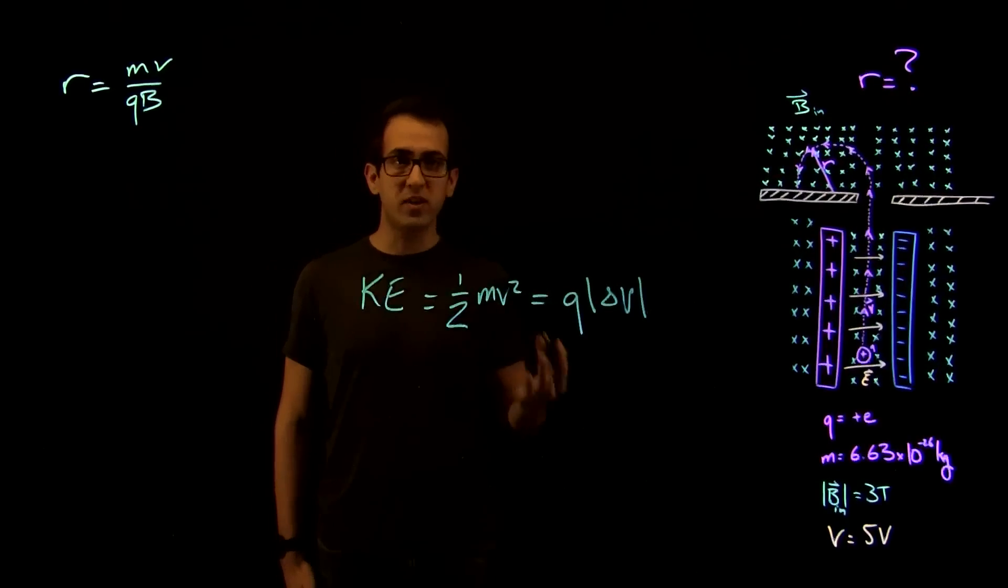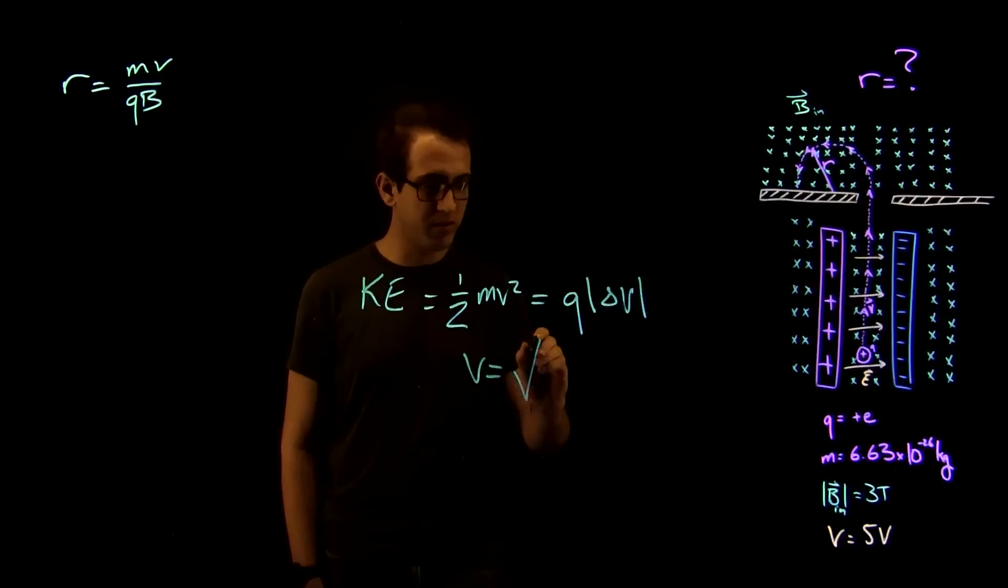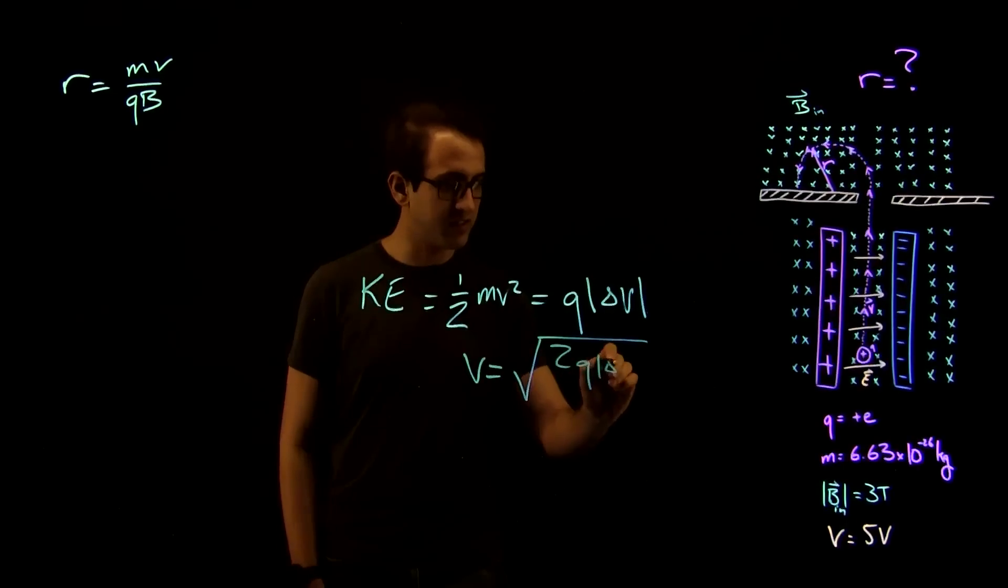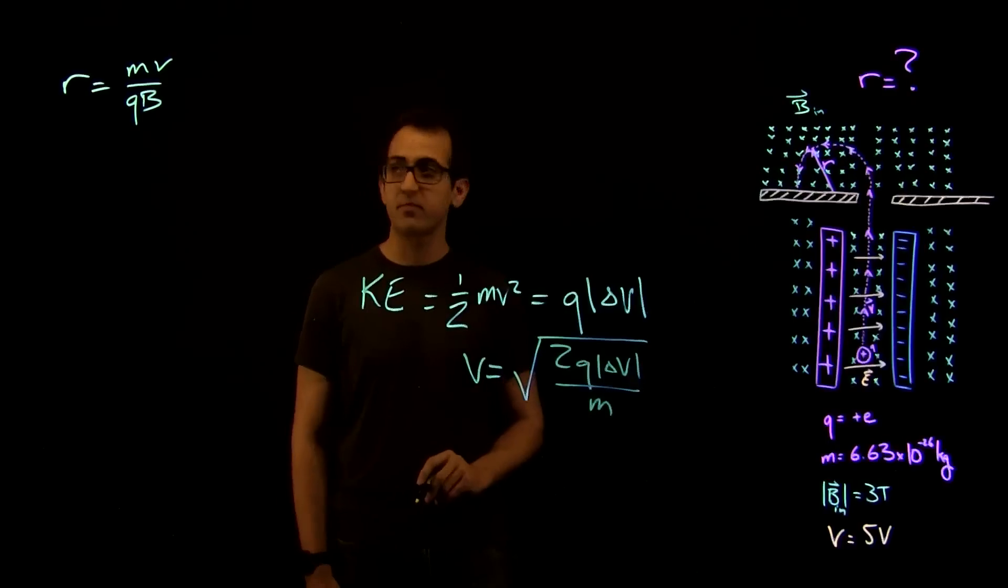So rearranging this, we get V is equal to the square root of 2Q delta V over M.